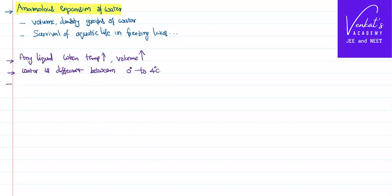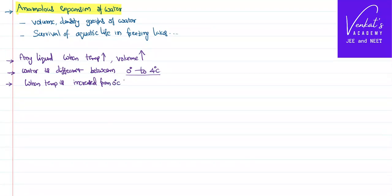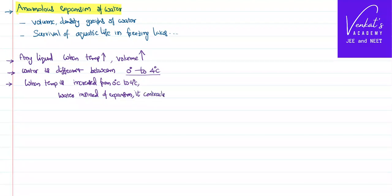Water has a peculiar, specific property due to which when you raise the temperature of water from 0 to 4 degrees centigrade, water instead of expanding like any other liquid, it contracts. That specific property of water is called anomalous expansion of water, and be careful — that property is limited only between temperatures 0 and 4 degrees centigrade.